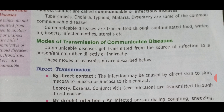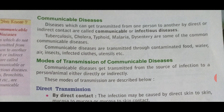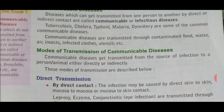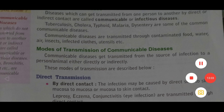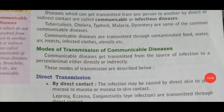These communicable diseases are easily transmitted from one person to another. They spread through contaminated food, water, air, insects, infected clothes, utensils, etc. With this I will complete this topic on communicable diseases. In our next video, I will discuss the modes of transmission of communicable diseases.